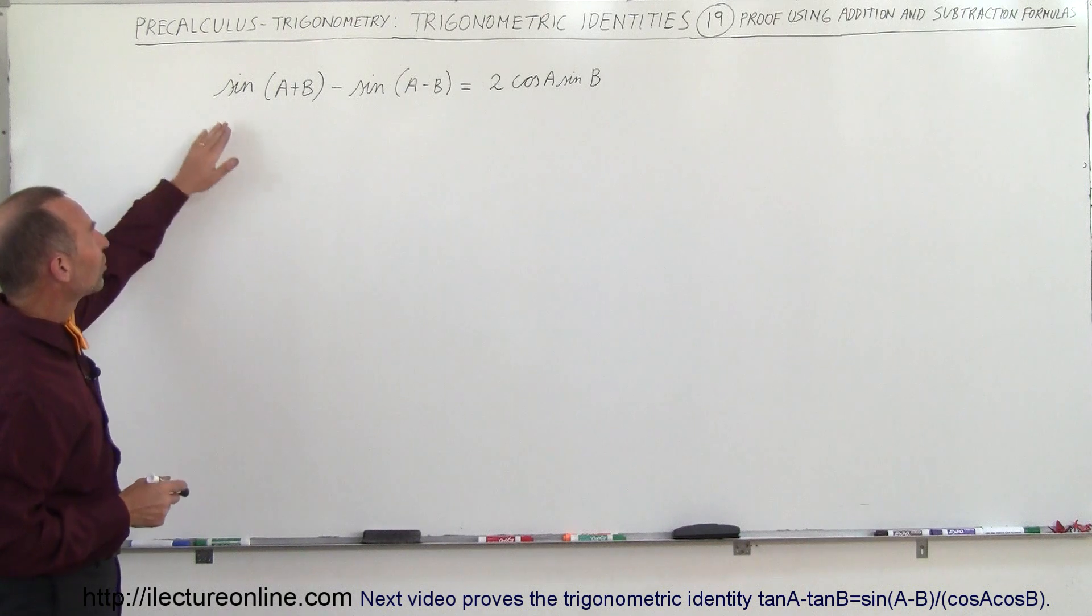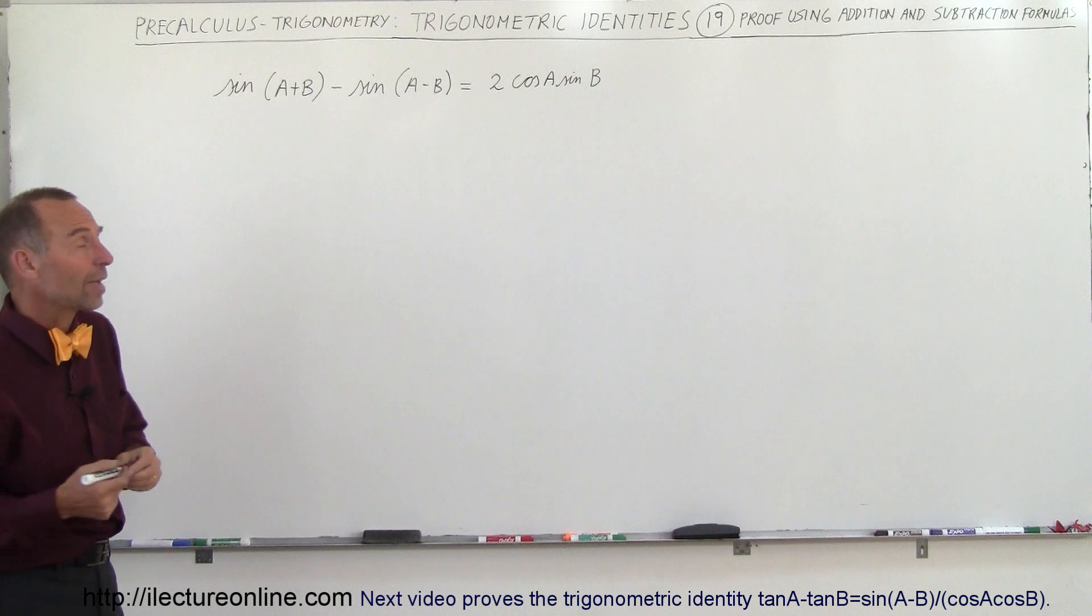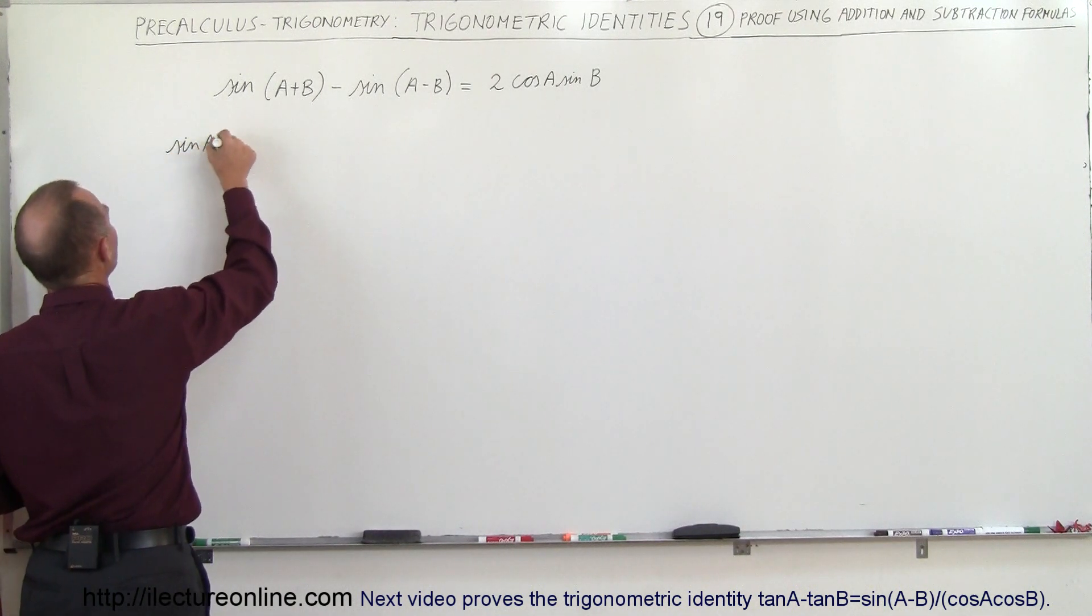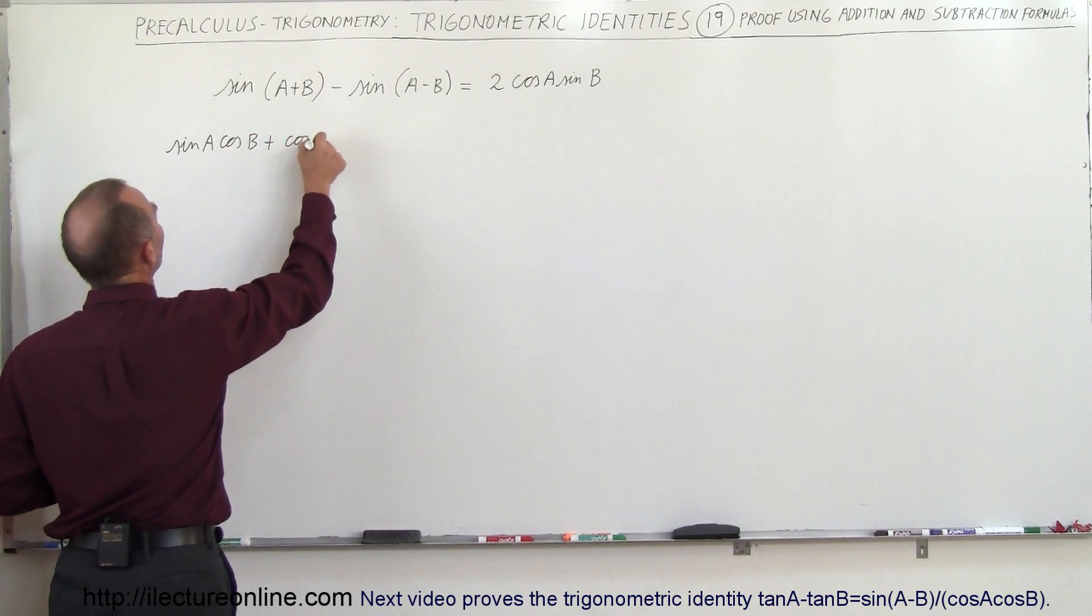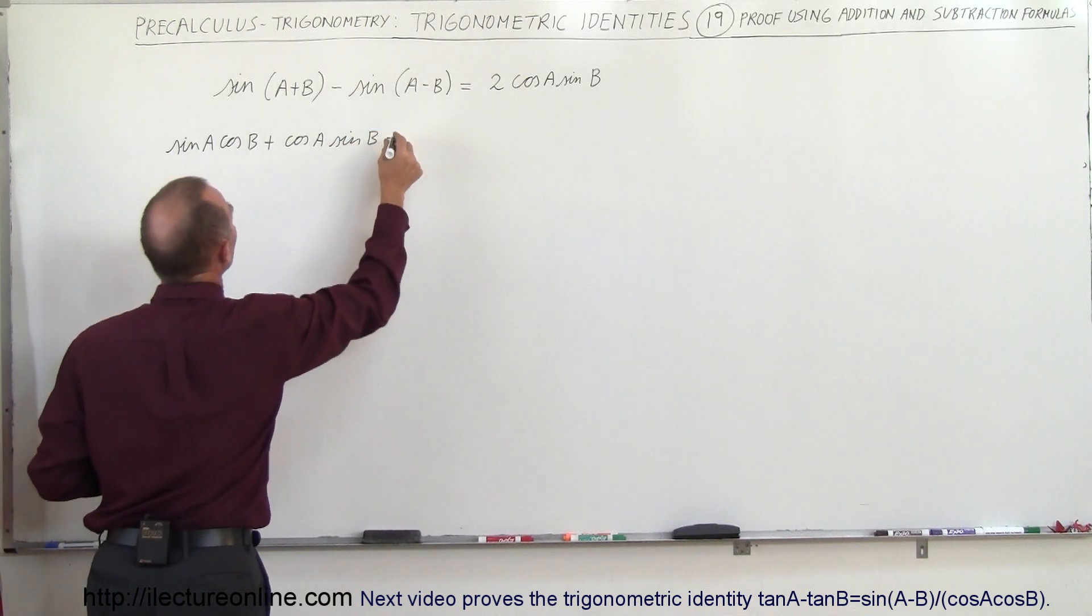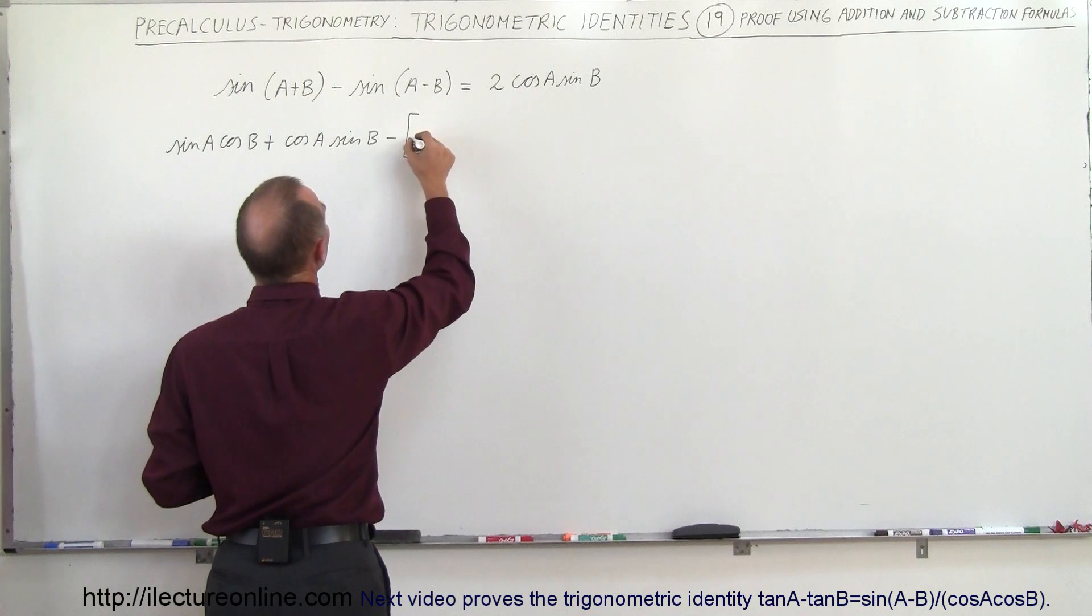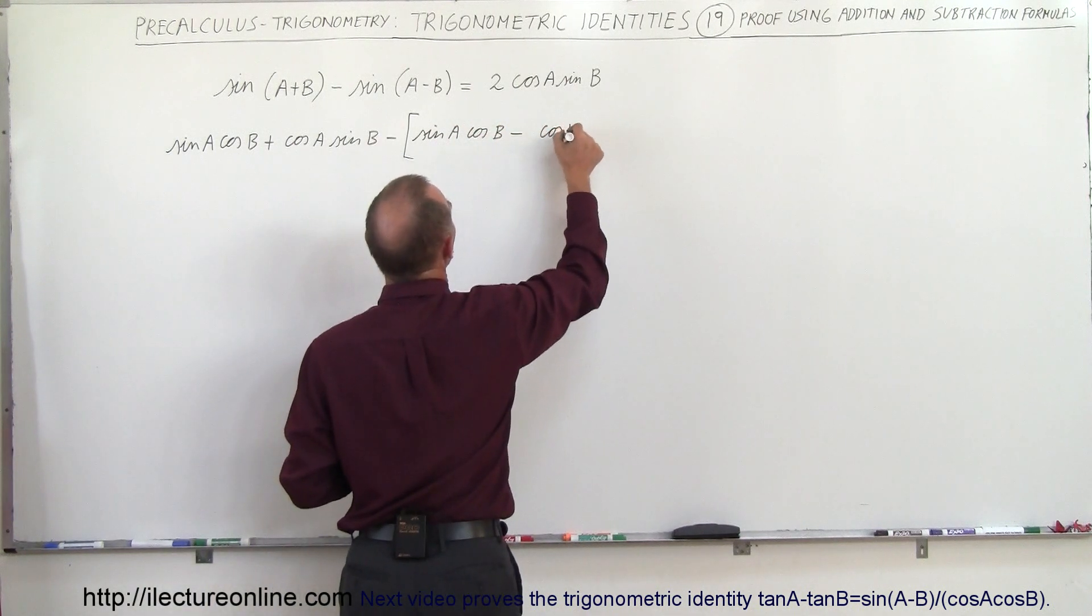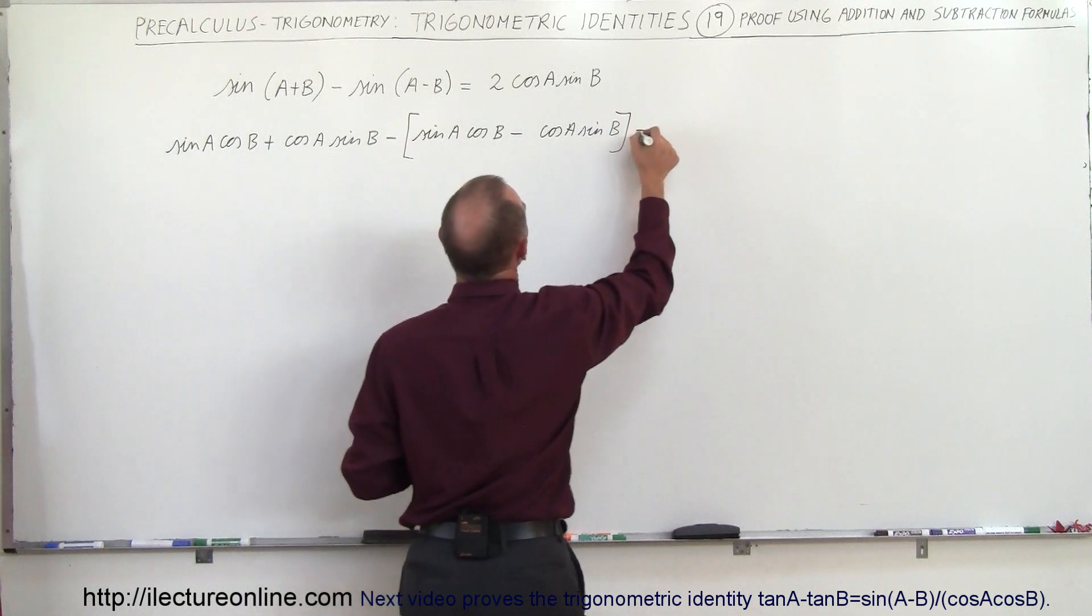So what we're going to do here is simply expand this. We know what the sine of a sum of two angles and the sine of the difference of two angles is equal to. So let's write this as the sine of A times the cosine of B plus the cosine of A times the sine of B minus, and let me put parentheses here or brackets there, that would be the sine of A times the cosine of B minus the cosine of A times the sine of B.